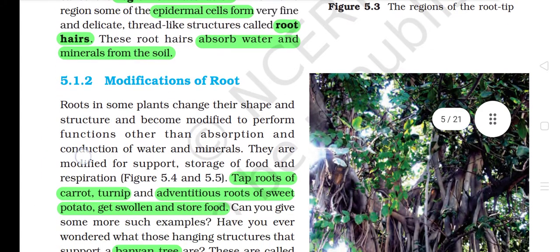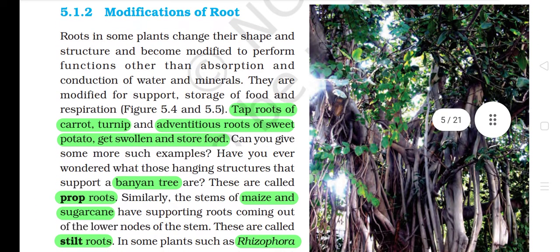5.1.2 Modifications of root. Roots in some plants change their shape and structure and become modified to perform functions other than absorption and conduction of water and minerals. They are modified for support, storage of food and respiration. Tap roots of carrot, turnip and adventitious roots of sweet potato get swollen and store food.